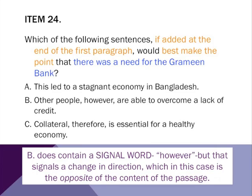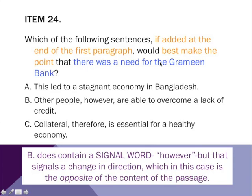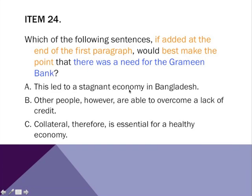If we continue to look at our answer choices, B also contains a signal word — the word however — which often indicates changes in direction. But if we look more carefully, it seems to indicate a change in direction from the rest of the paragraph. Most of the paragraph was talking about the fact that people didn't have access to credit or that they lacked credit. This would actually kind of contradict or make the paragraph weaker by saying that some people didn't have this problem. That does not seem to help because the idea is we have to show that there was a need for something. So we can eliminate B as well. Remember, we discussed earlier that there was a lack of credit.